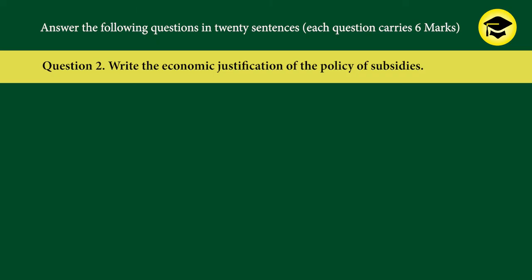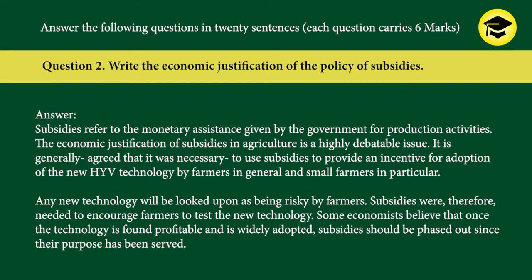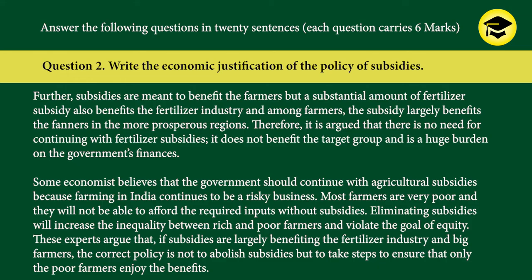Question 2: Write the economic justification of the policy of subsidies. Answer: Subsidies refer to monetary assistance given by the government for production activities. The economic justification of subsidies in agriculture is a highly debatable issue. It is generally agreed that it was necessary to use subsidies to provide an incentive for adoption of the new HYV technology by farmers in general and small farmers in particular. Any new technology will be looked upon as risky by farmers, so subsidies were needed to encourage them to test it. Some economists believe that once the technology is widely adopted, subsidies should be phased out. Further, subsidies are meant to benefit farmers, but a substantial amount of fertilizer subsidy also benefits the fertilizer industry and largely benefits farmers in more prosperous regions. Therefore, it is argued there is no need for continuing fertilizer subsidies as it does not benefit the target group and is a huge burden on the government's finances.